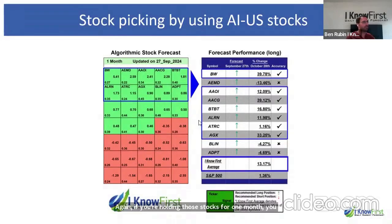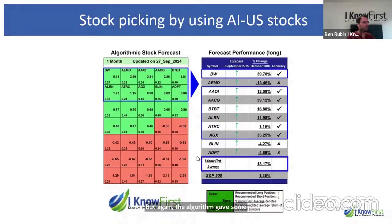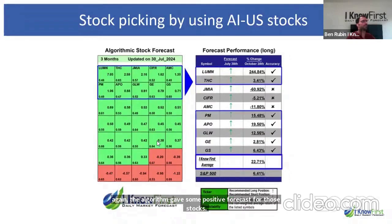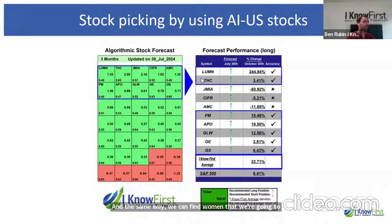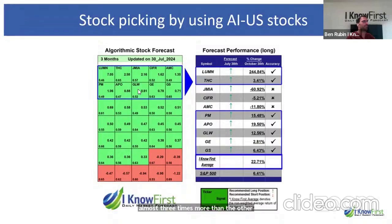In the one-month forecast, holding those stocks from September 27th — even though volatility was high and we didn't know what the market would do — the algorithm gave positive forecasts and they made almost 13%. In the three-month forecast, we can find LUMN which moved almost 250% in three months. This stock had the highest signal in the forecast — nearly 7 — compared to other stocks with signals around 2.5 to 2.6, almost three times higher.